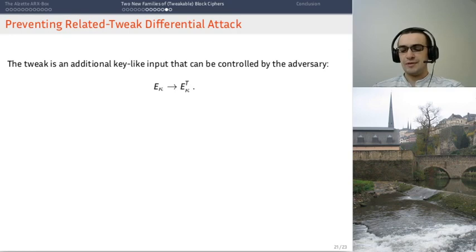So, a tweakable block cipher has three inputs. The plain text, the key, as before, and the tweak. The tweak kind of acts like a key, but which you can assume is under the control of the adversary. So, not only does the adversary know it, maybe they can even choose it. Which gives a new venue for attack, because then the adversary can inject differences through the tweak.